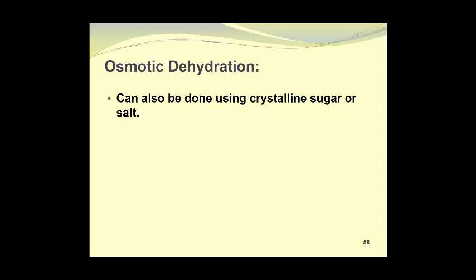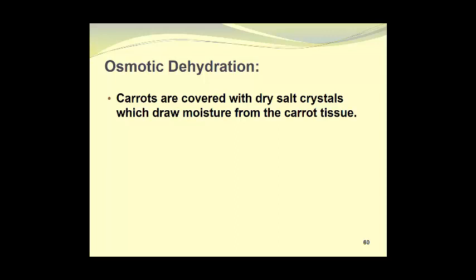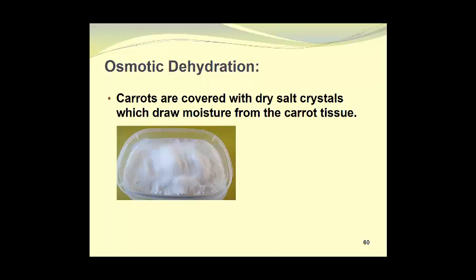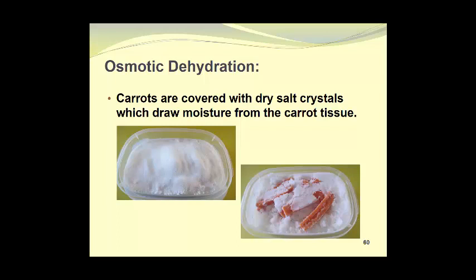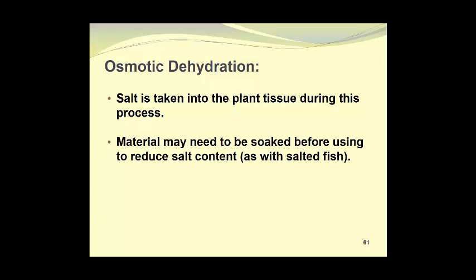We can also use crystalline sugar or crystalline salt for osmotic dehydration. This technique has been used for many years to dry fish. In our example, we will use carrots instead of fish. Carrots are being covered with dry salt crystals, which will draw moisture from the carrot tissue. Here you see the carrots being covered with salt crystals. And as we scrape the salt away, you can see how it's caking due to the moisture removal from the carrots. Salt is taken into the plant tissue during this process, and the material may need to be soaked before using it to reduce the salt content, which is typical with salted fish. Salt intake is an important dietary consideration, so you need to think carefully about this.